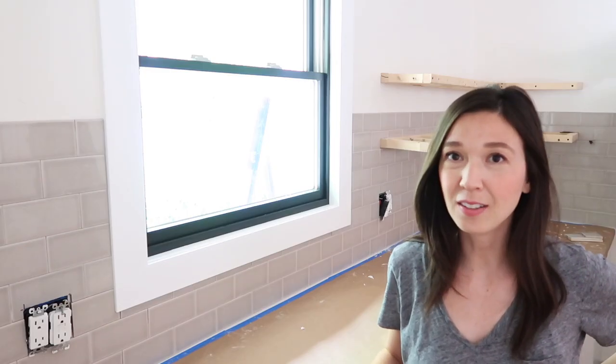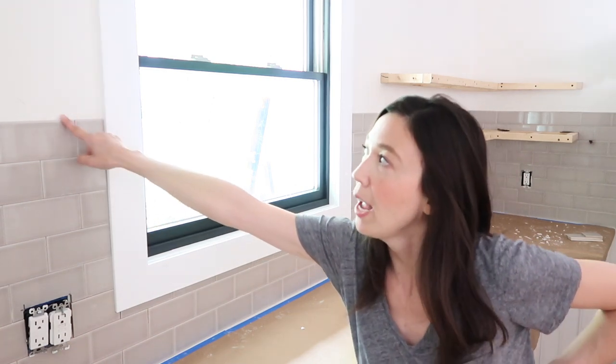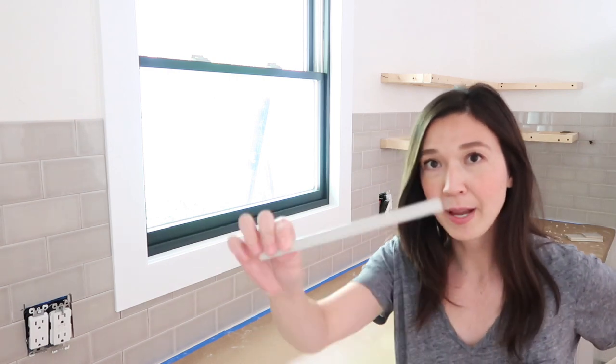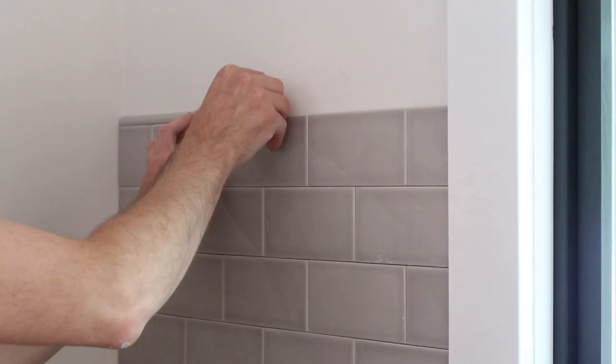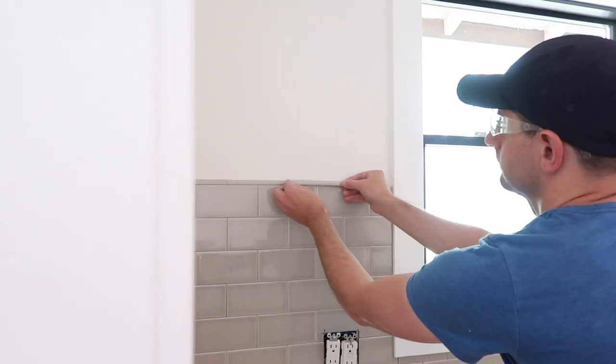The tile is all installed, it goes about a third of the way up the wall, but we still have a raw edge at the top, so this is where pencil tile is going to come in. It gets applied the same way, just a little bit of mastic, and it sits right at the top edge of the tile finishing it off.